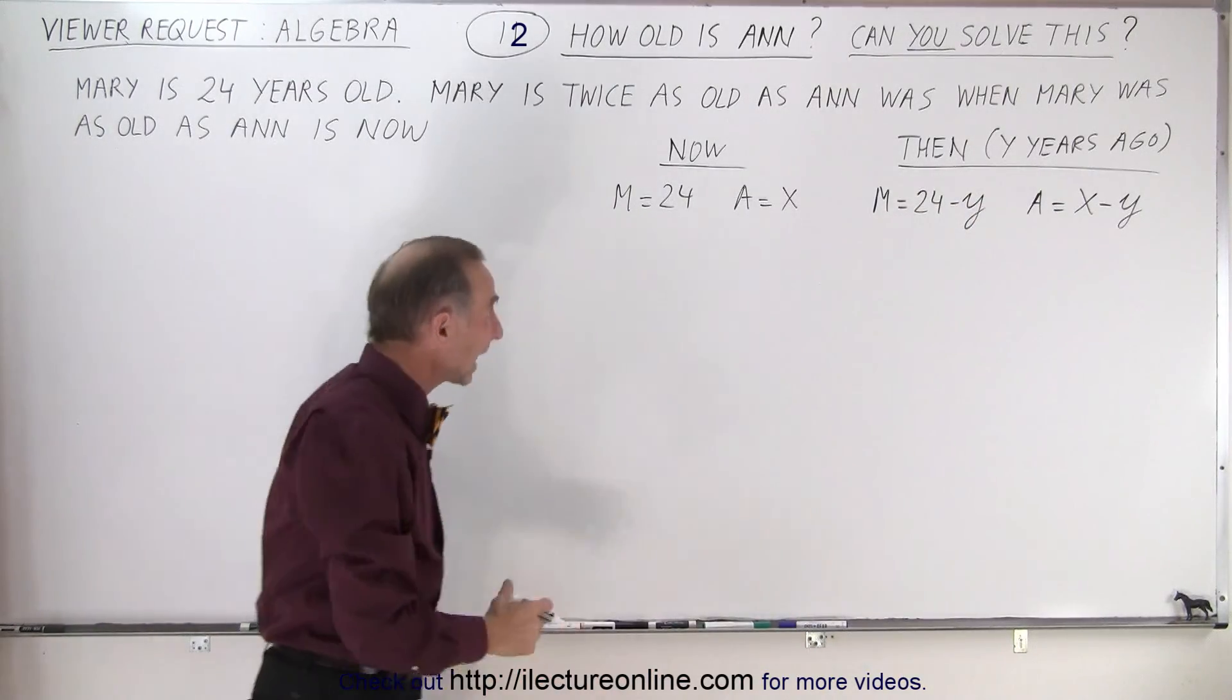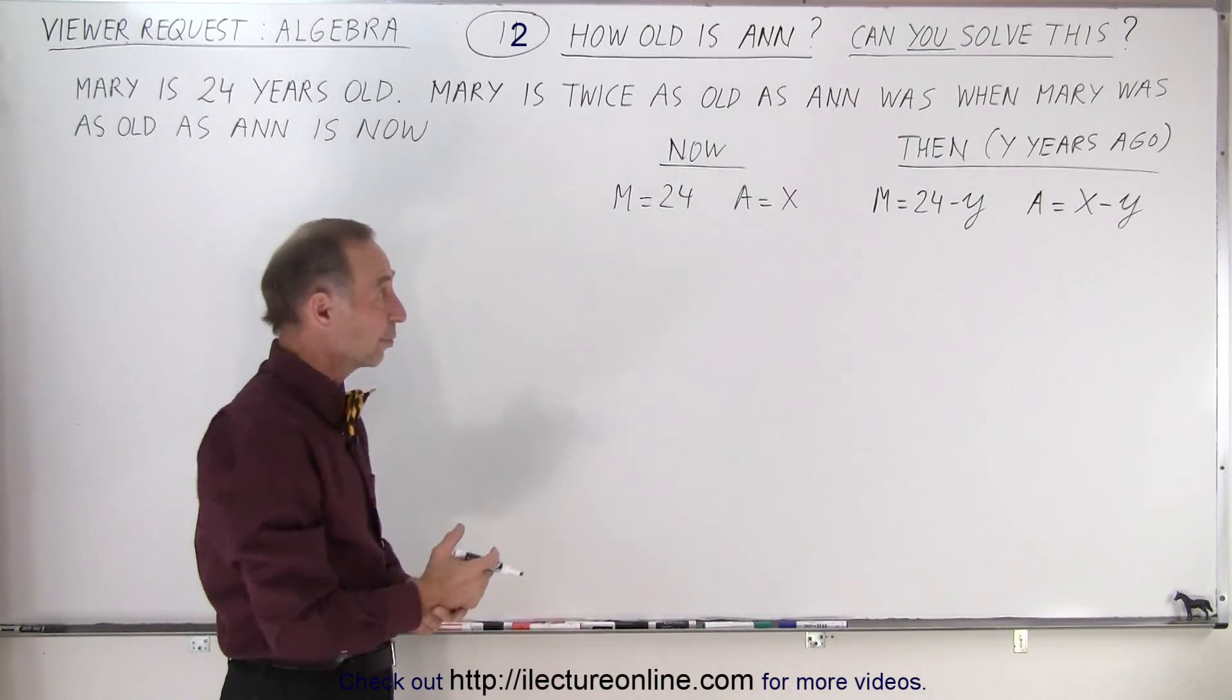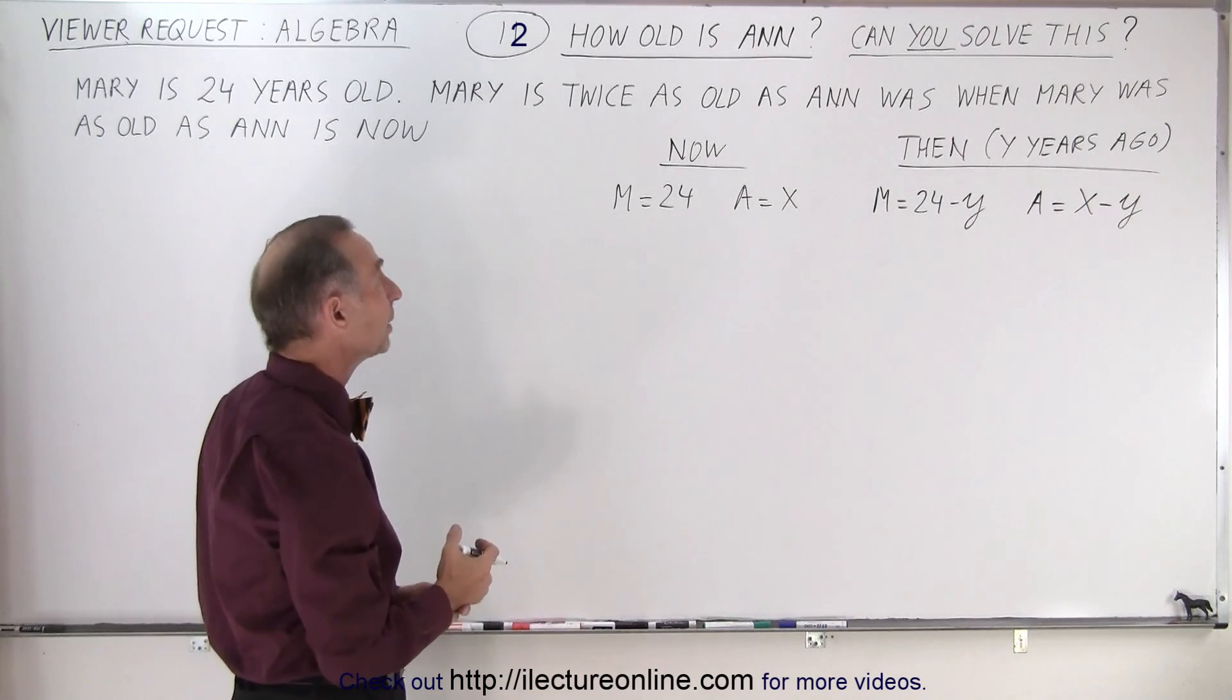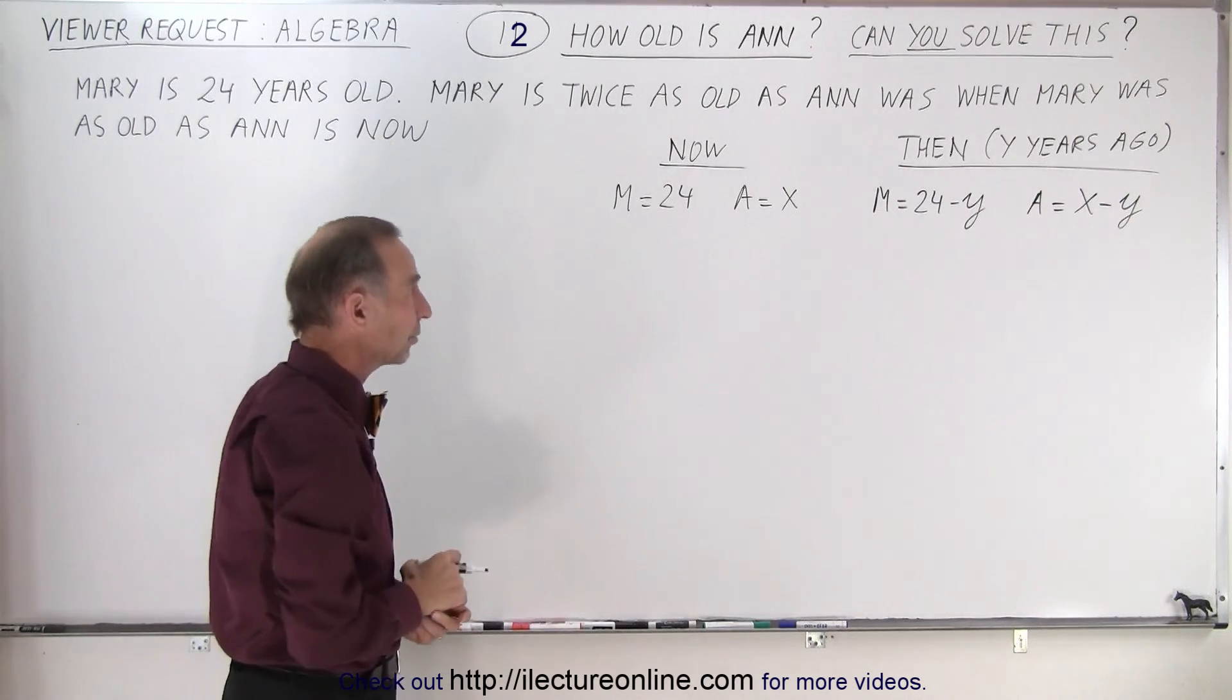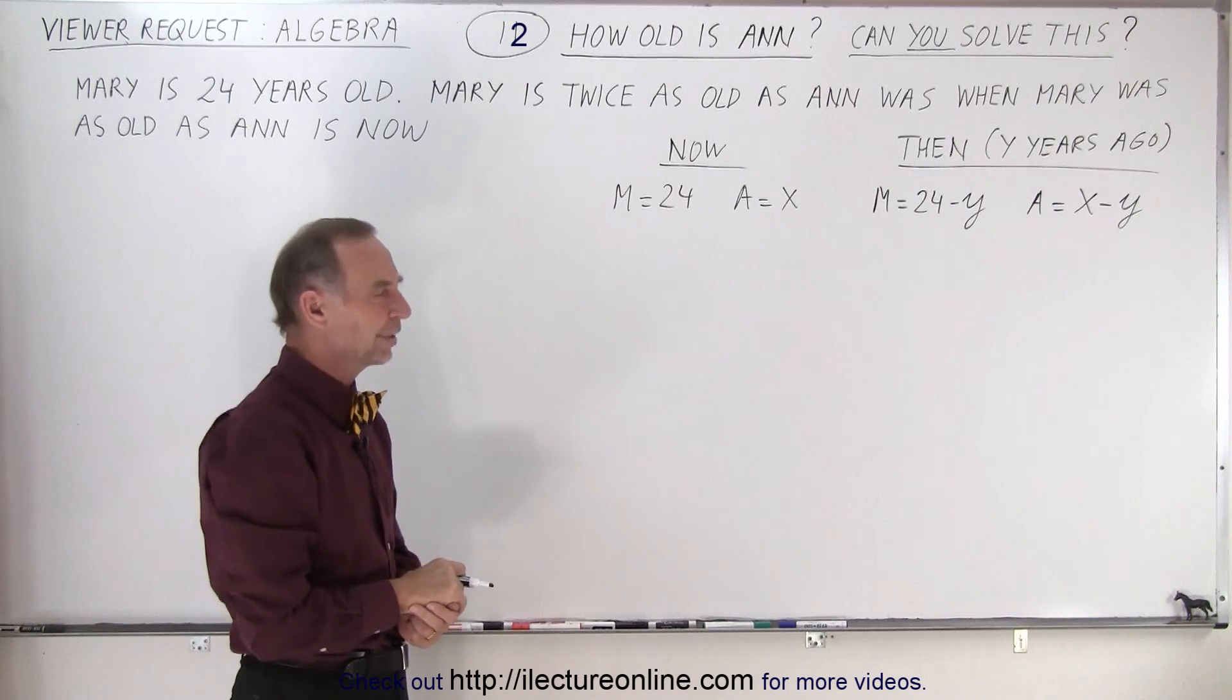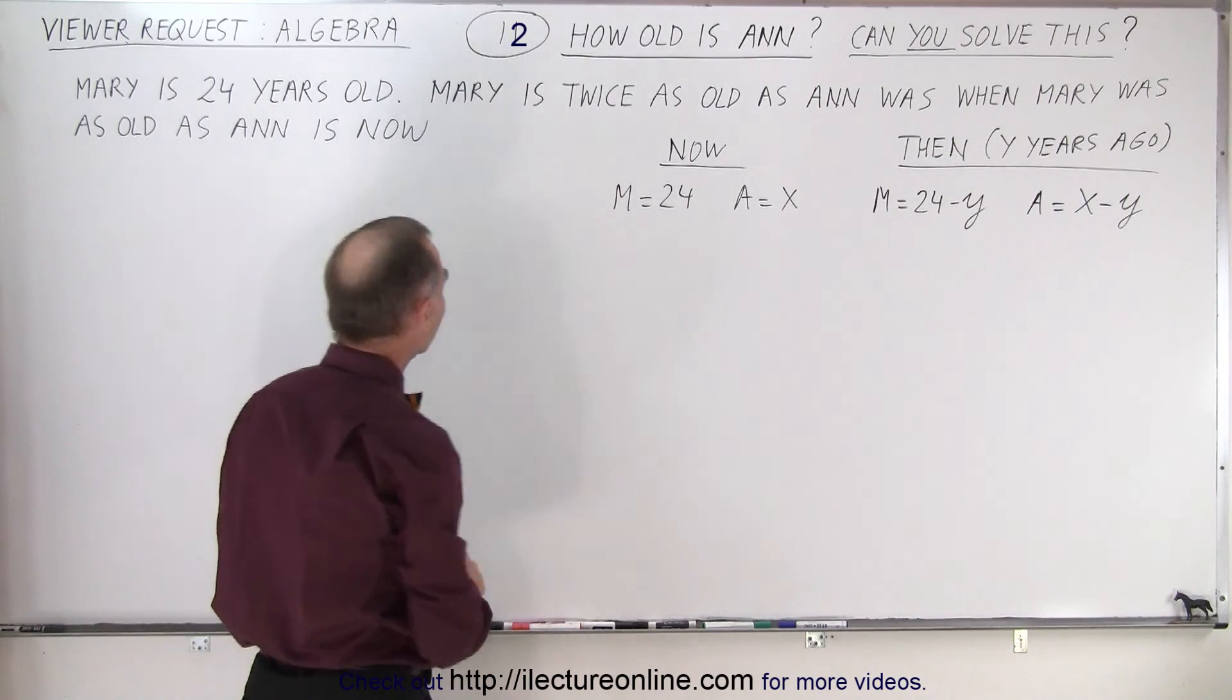So notice there's two variables X and Y. We don't know what either one of them is. We don't know how many years ago they're talking about and we don't know the age of Anne today. So how do we solve that? Well, now we have to have a clue somewhere.